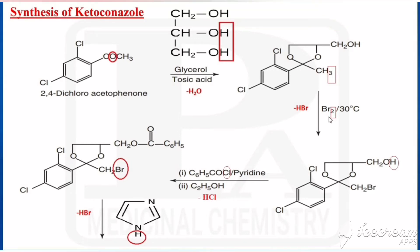Now we are going for bromination by means of bromine at 30 degrees centigrade. One hydrogen from the CH3 combines with the bromine, and we are getting a bromo derivative.